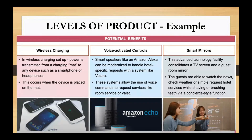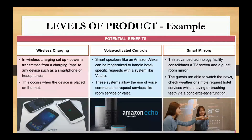The final level is the potential level — how are you going to transform your product? One potential benefit in the hotel example is a wireless charging system. Many hotels now provide charging mats. All you have to do is place your smartphone on the charging mat and it gets charged — you don't need to bring your charger. This is a potential benefit the consumer gets out of the service.